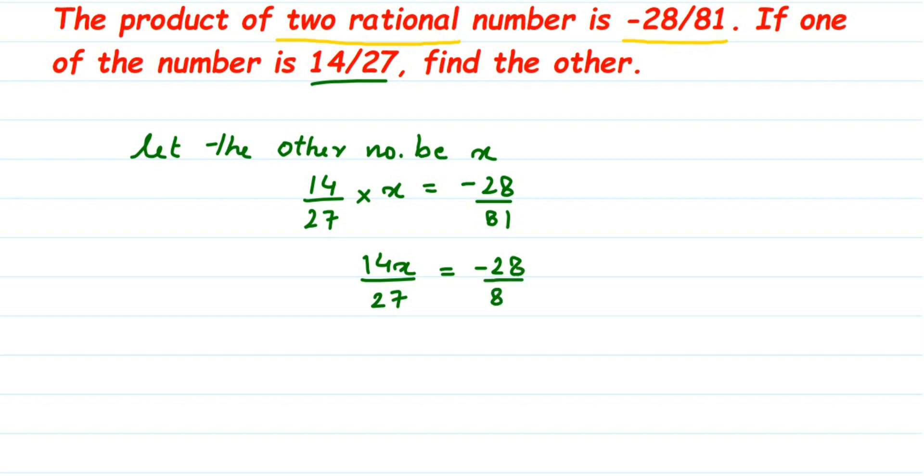Now we want the x value, so transpose 27 to the other side. Now 27 is in the division. When you transpose, it goes to numerator and it will get multiplied. So it will become 28 multiplied by 27 upon 81.